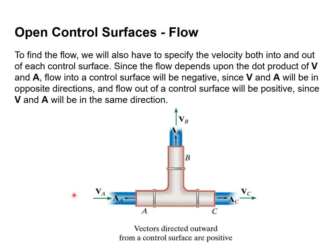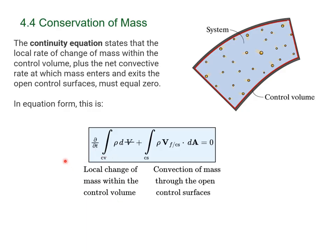To find the flow, we also have to specify the velocity both in and out of each control surface. So oftentimes it'll be given to us, but otherwise we'll have to just have to know it. So here in this picture, we're sort of told that it comes in at A and it goes out at B and C. Now the flow depends upon the dot product of V and A, as we've seen. That's the Q value, Q equals V dot A. So here, flow into a control surface will be negative. Since V and A will be in the opposite directions, like here, for example, if you're going outward, it'll be positive because you're in the same direction. So this shows that specifically here. V dot A here is positive. V dot A here is positive. V dot A here is negative.